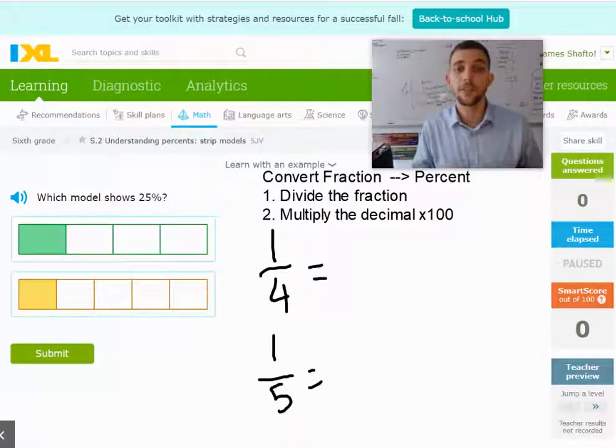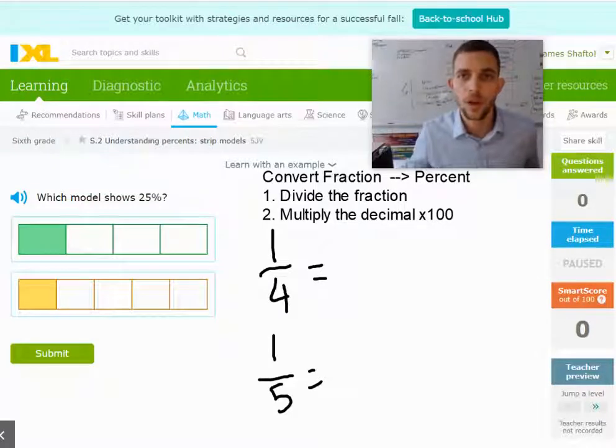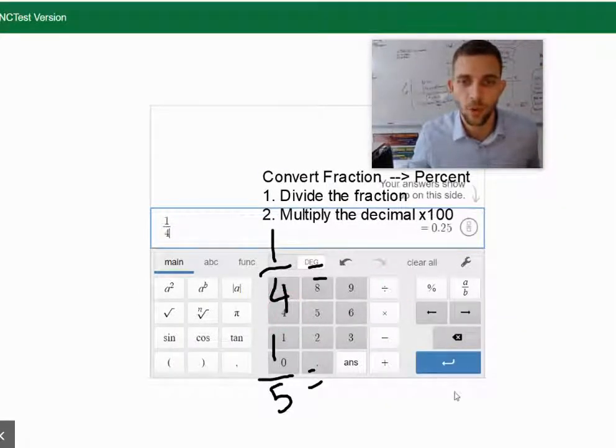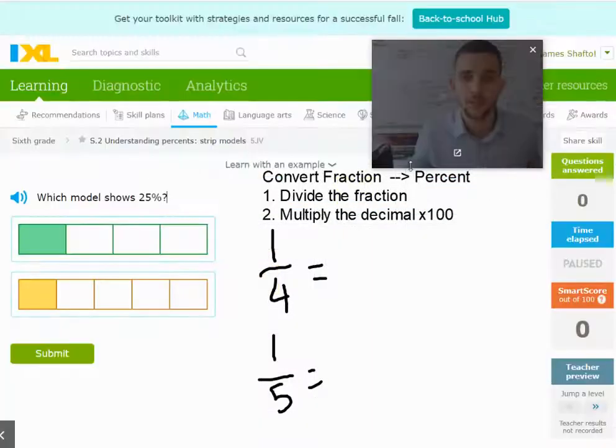If we take the fraction one-fourth and we divide it, we know that we can take one divided by four, and this is going to give us 0.25.